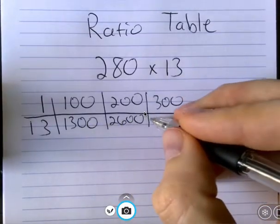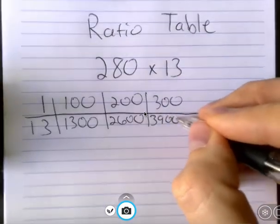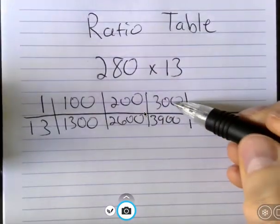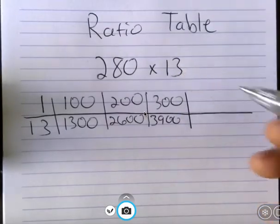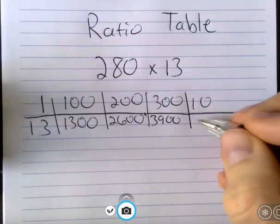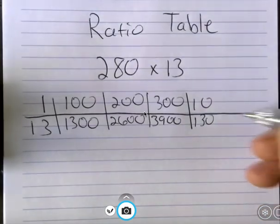Now I want to subtract 20 groups of 13. To do that I would first find well what's 10 times 13, which would be 130, and then I can just double that to get to 20, which would be 260.